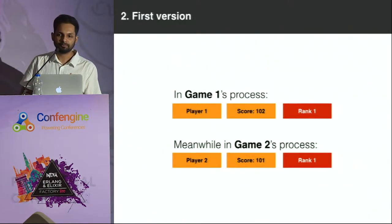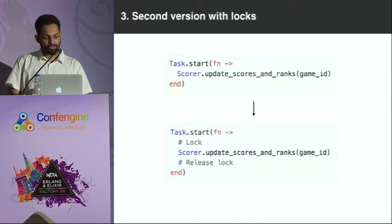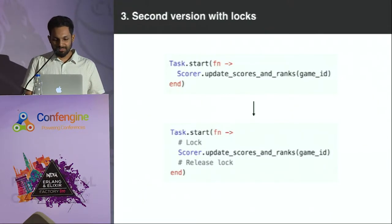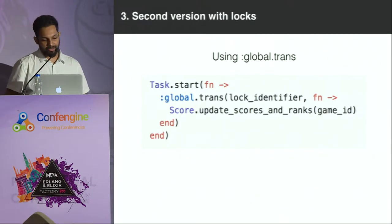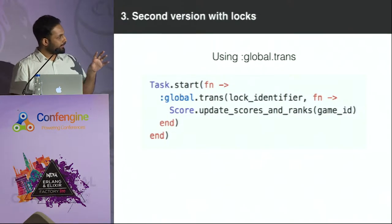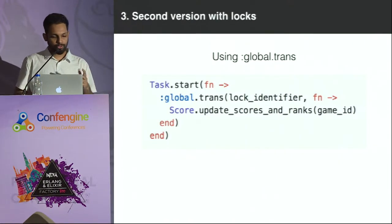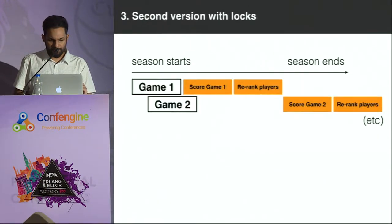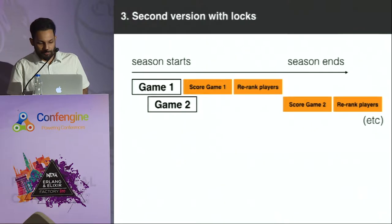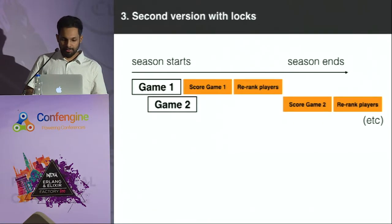How do we solve this problem? The first thing we do when we have concurrency problems is use locks. We wrap our code inside a lock so that only one scoring can happen at a time. This is how we write global locks in Elixir, or Erlang for that matter - using global.trans, which ensures only one of these runs at a time across all nodes in your cluster. Now without concurrency, it would take a really long time for the scoring to finish, but at least we don't have any bugs.